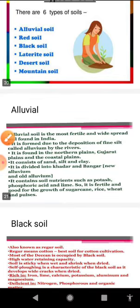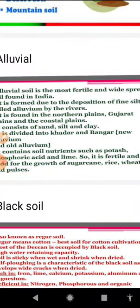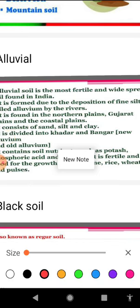Let us discuss different varieties of soil one by one. First, alluvial soil is the most widely spread and important variety, found in the entire northern plain of India and in coastal areas, particularly in the deltas of Mahanadi, Godavari, Krishna, and Kaveri. On the basis of age, alluvial soil can be categorized into two main types: khadar and bhangar.